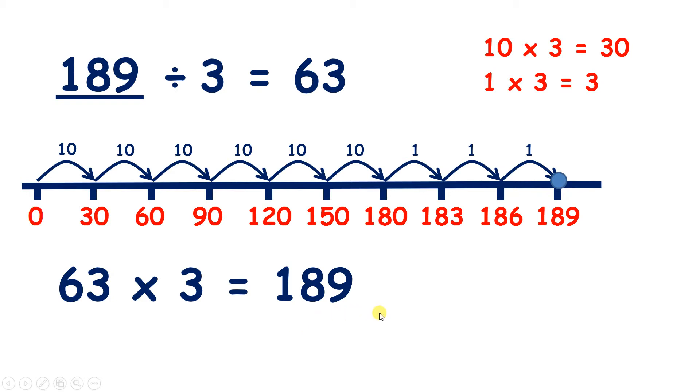So we could have used column multiplication to find our missing number. 3 times 3 is 9, 6 times 3 is 18, and that gives us our missing number, 189.